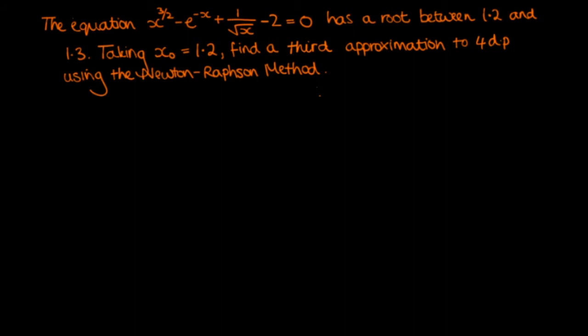So here we have a typical problem involving the Newton-Raphson method. The equation x to the power 3 over 2 minus e to the minus x plus 1 over the square root of x minus 2 equals 0 has a root between 1.2 and 1.3. Taking x0 to equal 1.2, find a third approximation to four decimal places using the Newton-Raphson method.